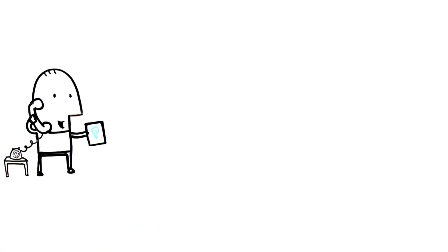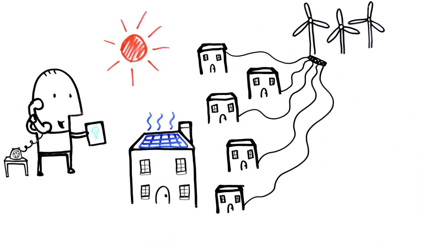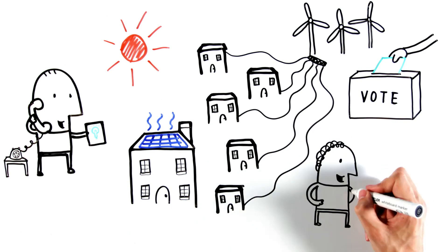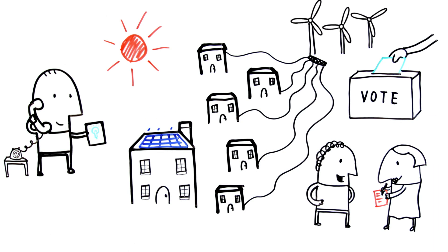Secondly, think about switching to a green energy supplier, or even generating your own electricity. And finally, don't be afraid to push politicians and companies for change. By voting for the greenest parties, signing petitions, writing to MPs and avoiding organisations that operate unsustainably, you can create change.